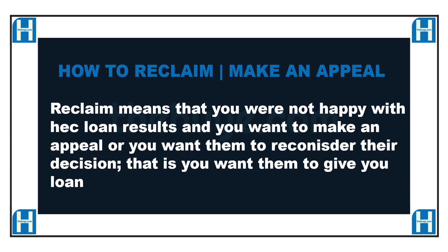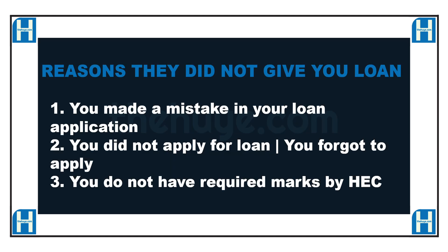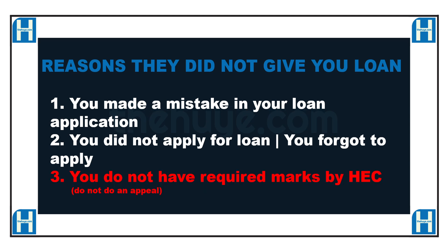There are mainly two or three reasons they did not give you a loan. Reason number one: while applying for a loan, you made a mistake — perhaps in your registration number, your ID, or your names. Reason number two: you did not apply for a loan at all. And lastly, the most obvious reason: you do not have enough marks to qualify for a loan to study at the University of Rwanda. For the first two types of students, I advise them to do an appeal.